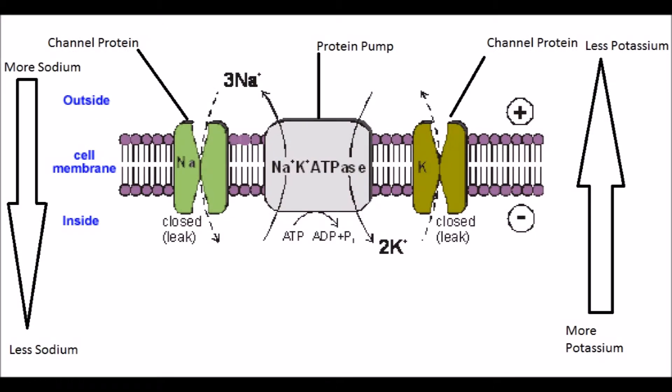The plasma membrane also serves to maintain the resting potential of the cell. This simply means that at rest the cell prefers to have a more negative charge when compared to the outside of the cell. Sodium and potassium ions help to maintain the negative charge in the cell. However, sodium and potassium ions are also needed for cellular work, and the two channel proteins responsible for their transport tend to be leaky.